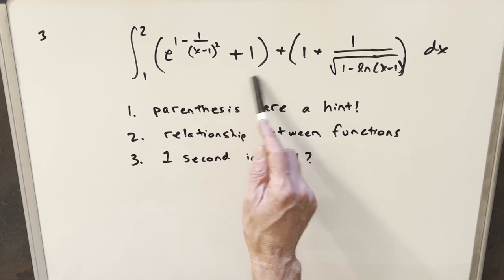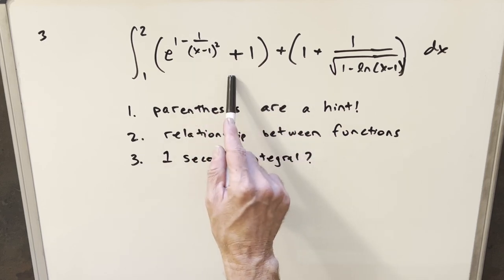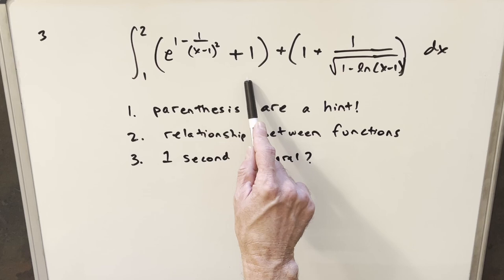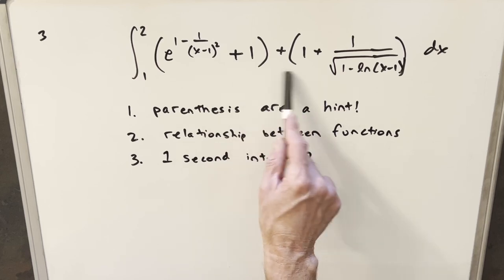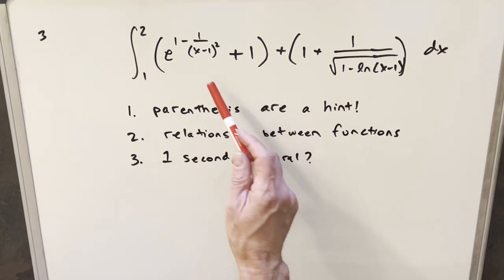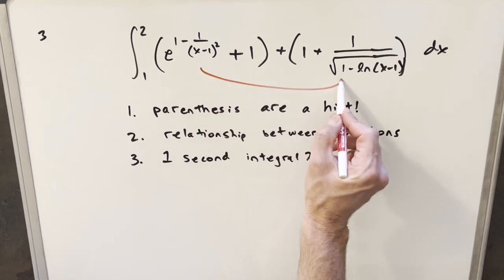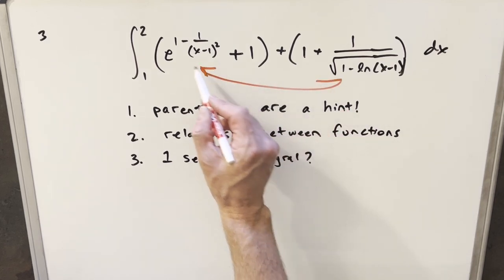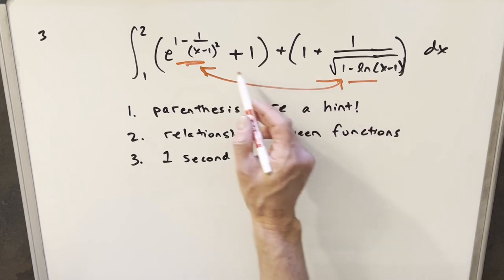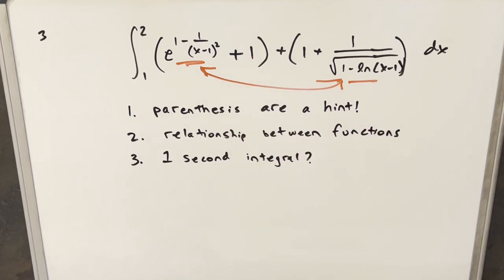And I think the parentheses are kind of a hint as to how we want to go about it. They're not just there for no reason. Now point number two, now we're adding everything. We could just try to split this into not four integrals, but we could maybe do this as three integrals with one of them being two. But again, the way they've written this, it makes me think that there's some kind of relationship between these two things. If not just this and this, then there's maybe a relationship including the one.